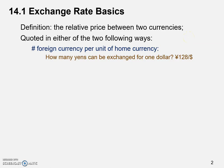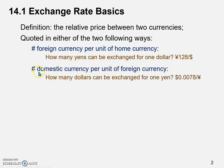Of course, it can be quoted the other way around: the number of units of domestic currency per unit of foreign currency. In this example, it would be how many dollars can be exchanged for one Japanese yen. As of today, that number is 0.0078 dollars per yen. Either way is fine, and actually both are pretty common. If you Google the exchange rate between U.S. dollar and Japanese yen, you would find different platforms and websites that use different ways to quote this rate.